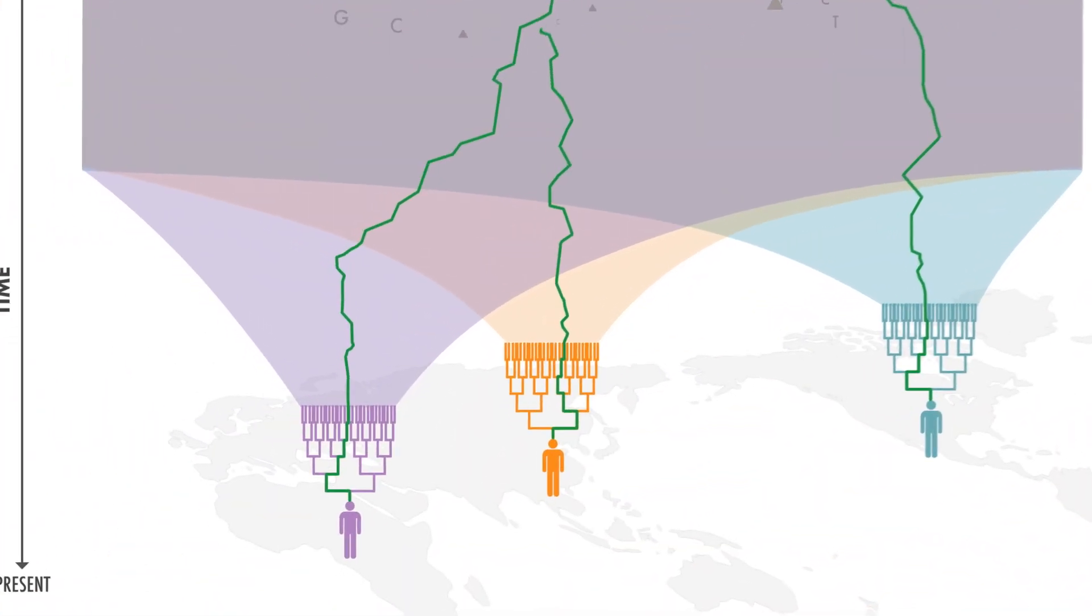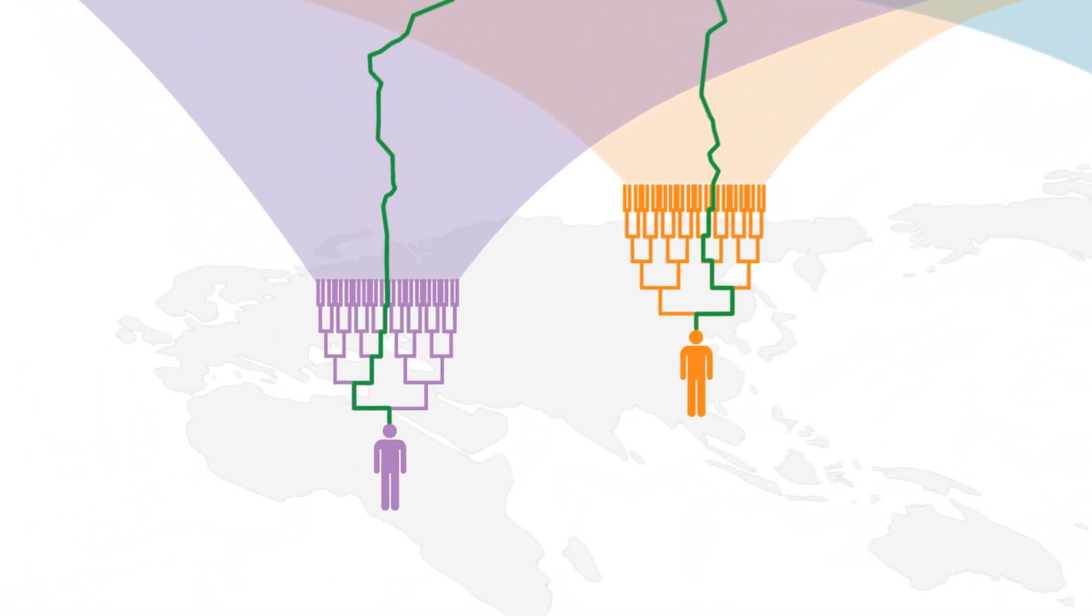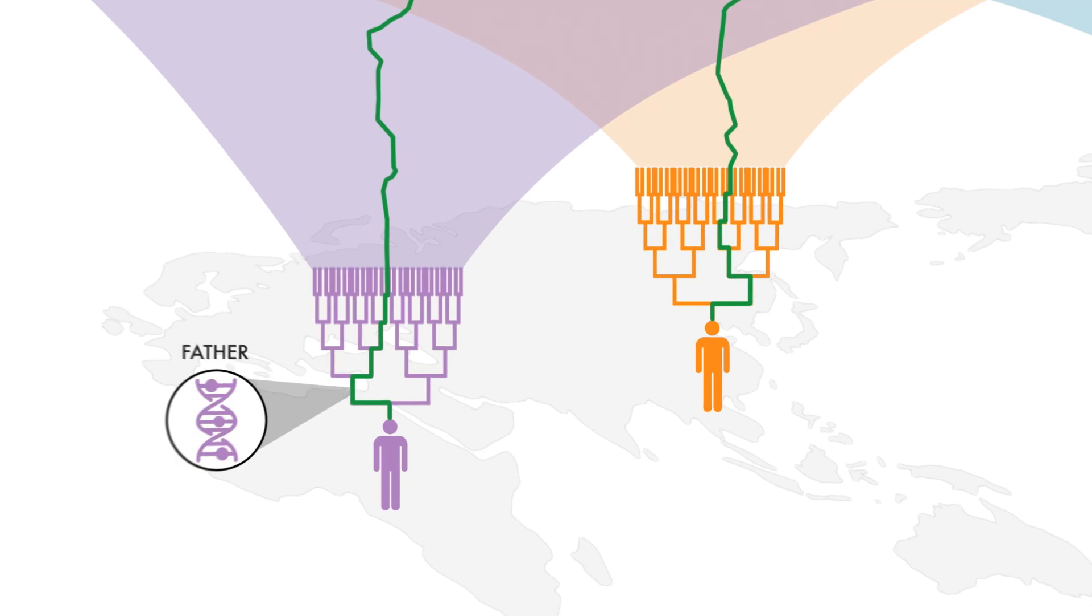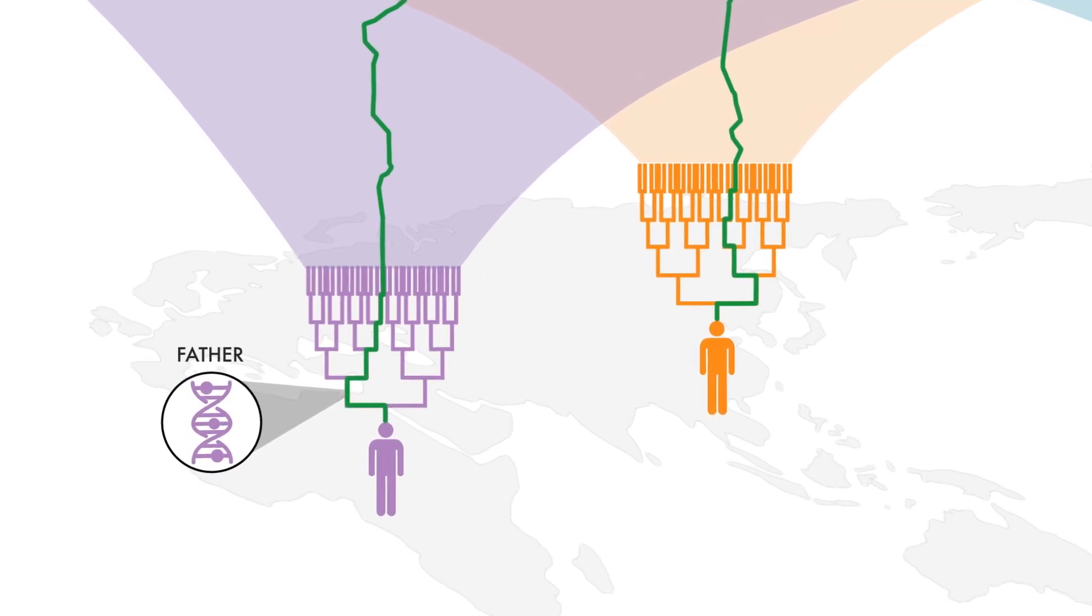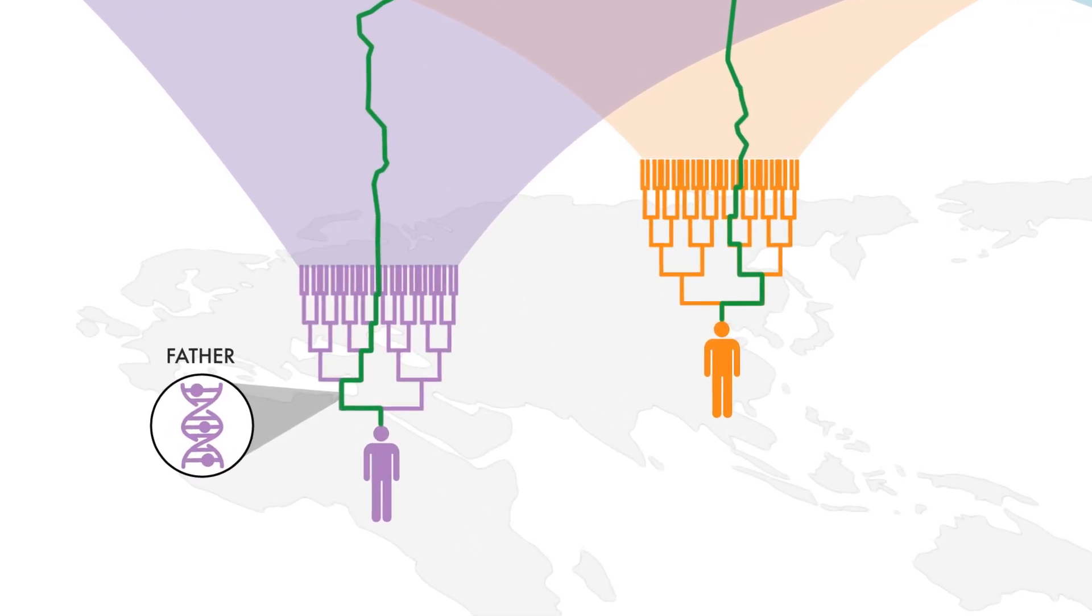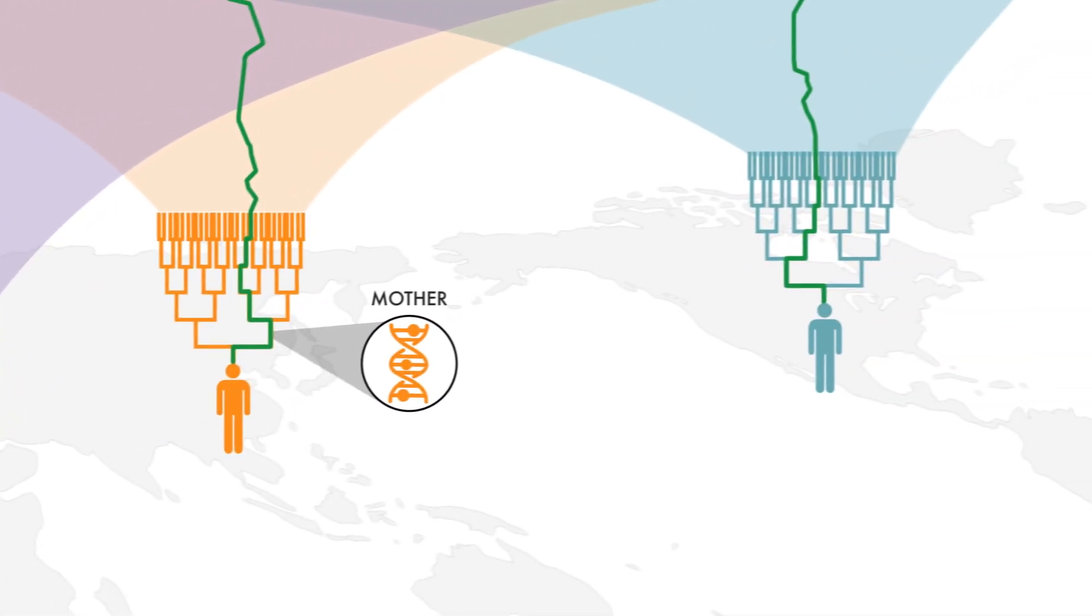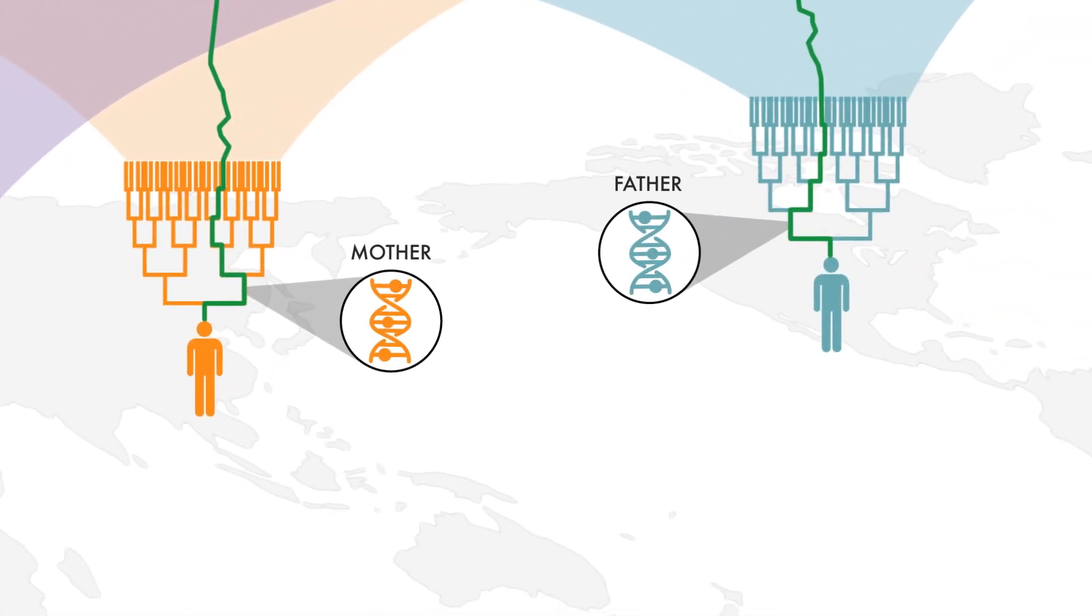If we consider a single segment of DNA, such as this green section here, that segment of DNA might be inherited from this purple individual's father. In the orange individual, that piece was inherited from their mother. Here, the blue individual inherited that piece from their father.